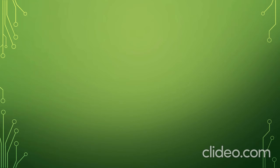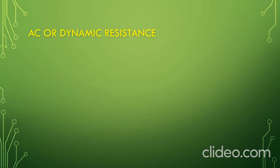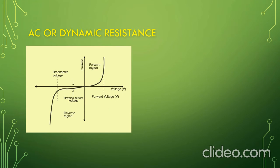Next, we talk about the AC or dynamic resistance of a PN diode. Again, we consider the volt-ampere characteristic curve of a PN diode. This side is the forward region and this side is the reverse region. How can we calculate the AC or dynamic resistance of a PN diode from this graph?